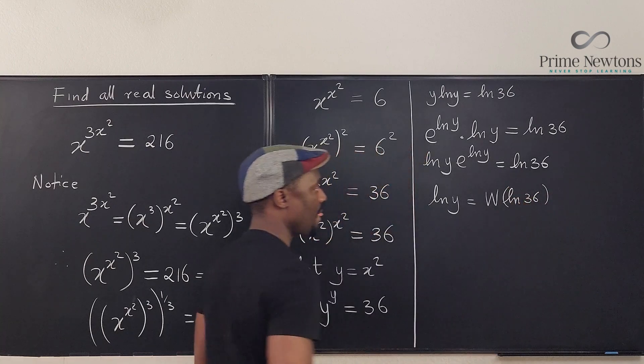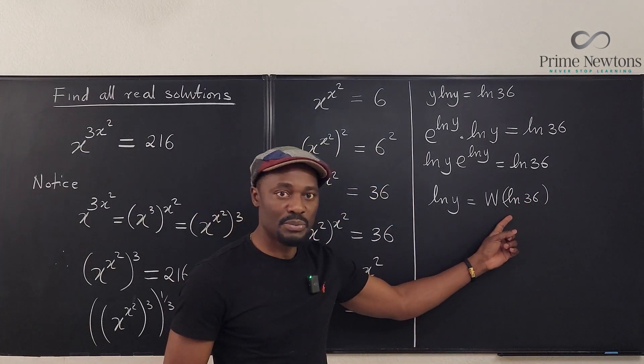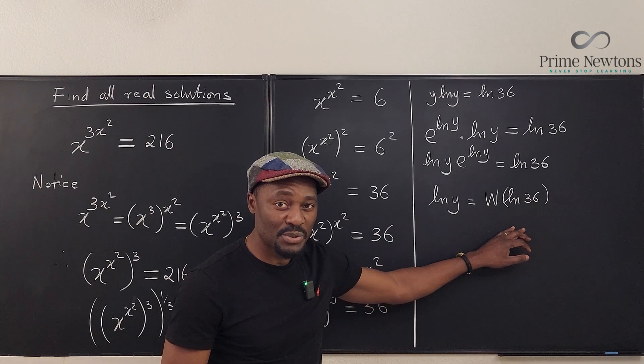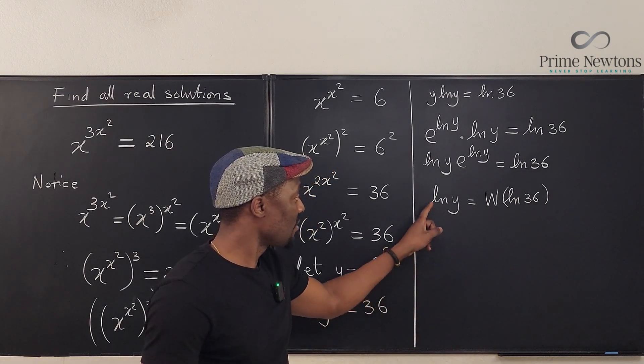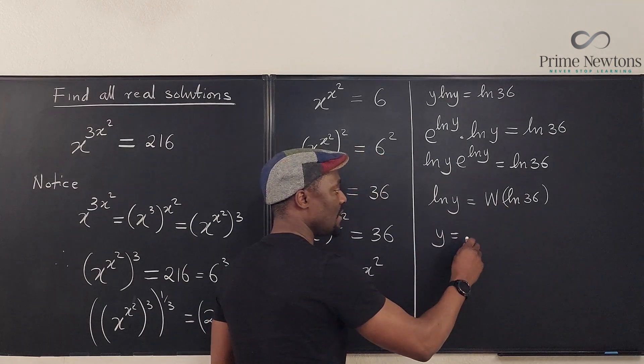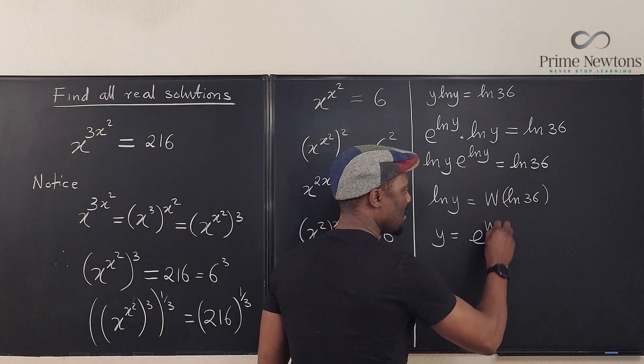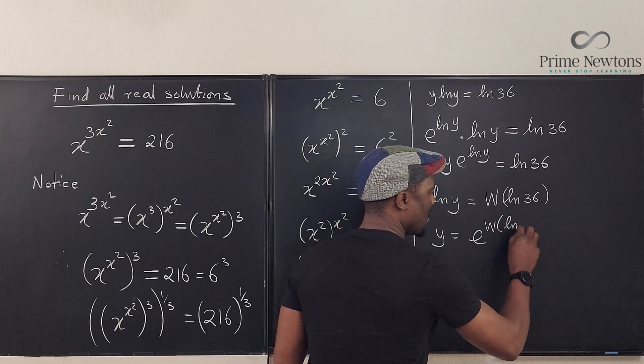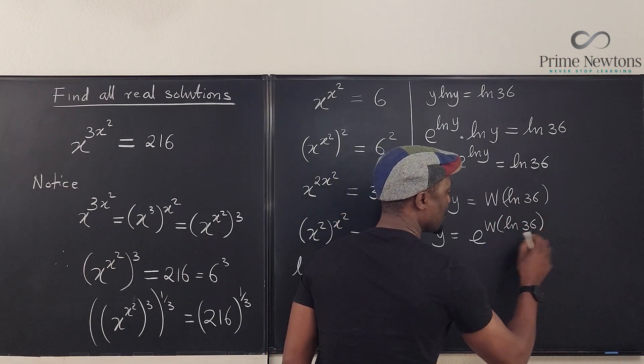Nice. And this we can compute. But for now, I don't want to compute this. I just want to get my final answer. What will y be? It means that y will be, if we take the e of both sides, e to the w of the natural log of 36. And that's what we've got. Nice, beautiful, no problem.